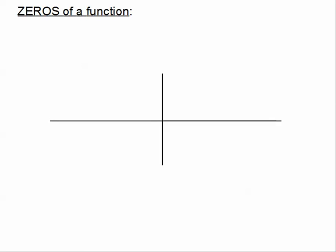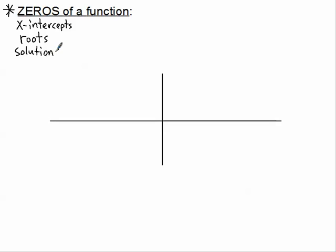Let's talk about the zeros of a function. Zeros has a bunch of different synonyms — zeros are the same thing as x-intercepts, the same thing as roots, and just the generic solutions or answers. So there are four different words we could be talking about: zeros, x-intercepts, roots, solutions.